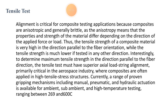Alignment is critical for composite testing applications because components are anisotropic and generally brittle. Anisotropy means that the properties and strength of the material differ depending on the direction of the applied force or load. Thus, the tensile strength of composite materials is very high in the direction parallel to the fibre orientation, while the tensile stress is much lower if tested in any other direction. To determine maximum tensile strength in the direction parallel to the fibre, the tensile test must have superior axial load alignment — primarily critical in the aerospace industry where composites are often applied in high tensile stress structures. A range of proven gripping mechanisms including manual, pneumatic, and hydraulic activation is available for ambient, sub-ambient, and high temperature testing, ranging between -269 and 600 degrees.